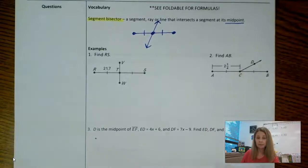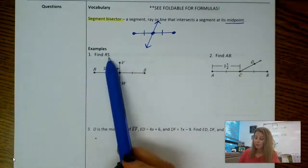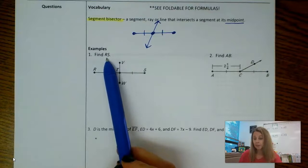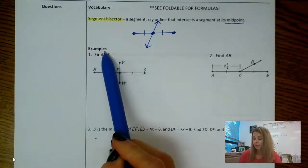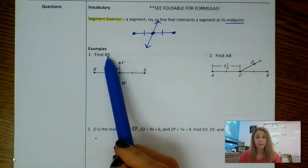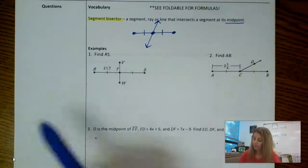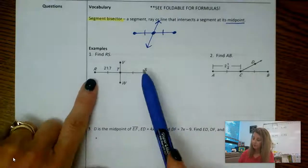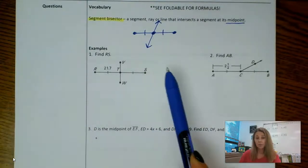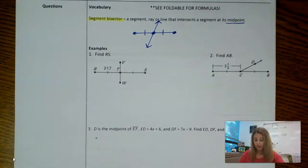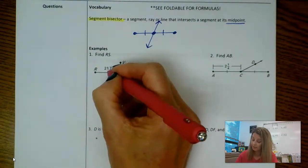A couple examples here. This says find RS, but remember it's more than just RS. There's no segment bar above it, so without that segment bar, it says find the length of RS. That means I want to figure out how long RS is. So what I want to notice here: I see tick marks.